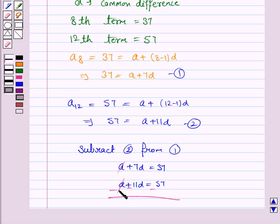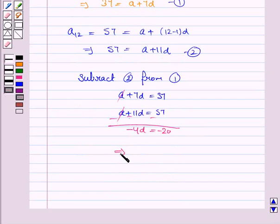Plus A gets cancelled with minus A. 11D, 7D minus 11D is minus 4D. 37 minus 57 is minus 20. So this implies D equals minus 20 upon minus 4, that is equal to 5. So the common difference is 5.